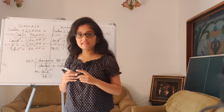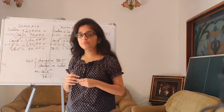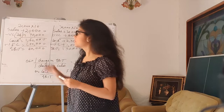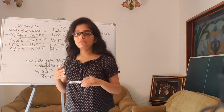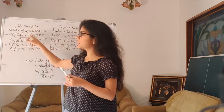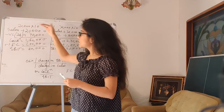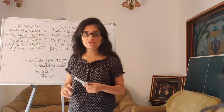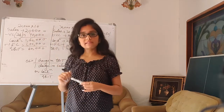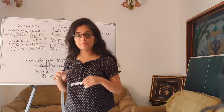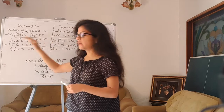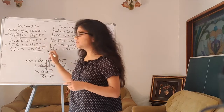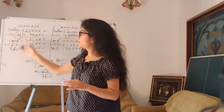Suppose I have sold 20,000 units and one unit is priced at 10 rupees, so my total sales comes out to 2 lakh rupees. I minus the variable cost — suppose my variable cost is 20%, so 20% of 2 lakh is 40,000 rupees. Sales minus variable cost gives us the contribution, which is 1 lakh 60,000 rupees. Then we subtract the fixed cost of 1 lakh rupees, giving us EBIT — Earnings Before Interest and Tax — of 60,000 rupees.